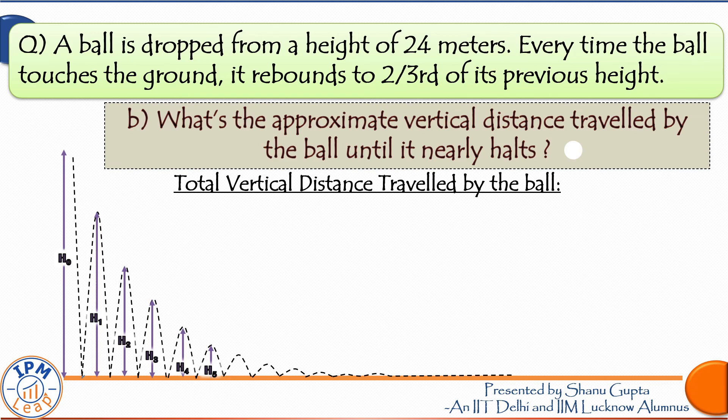The trick lies in visualizing what's happening and then jotting down the first few numbers. Okay, so see the height of the initial drop was 24 meters. The ball covered this distance only once while coming down. But every time the ball rebounds, it covers a distance equal to that height twice. Once when it is going up and then again when it is coming down. Up and down, up and down again.